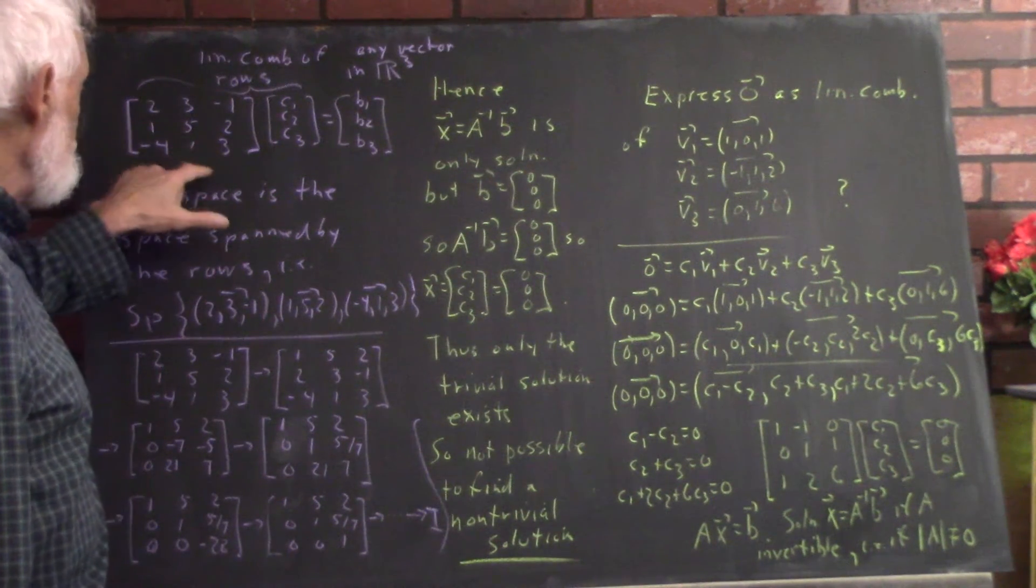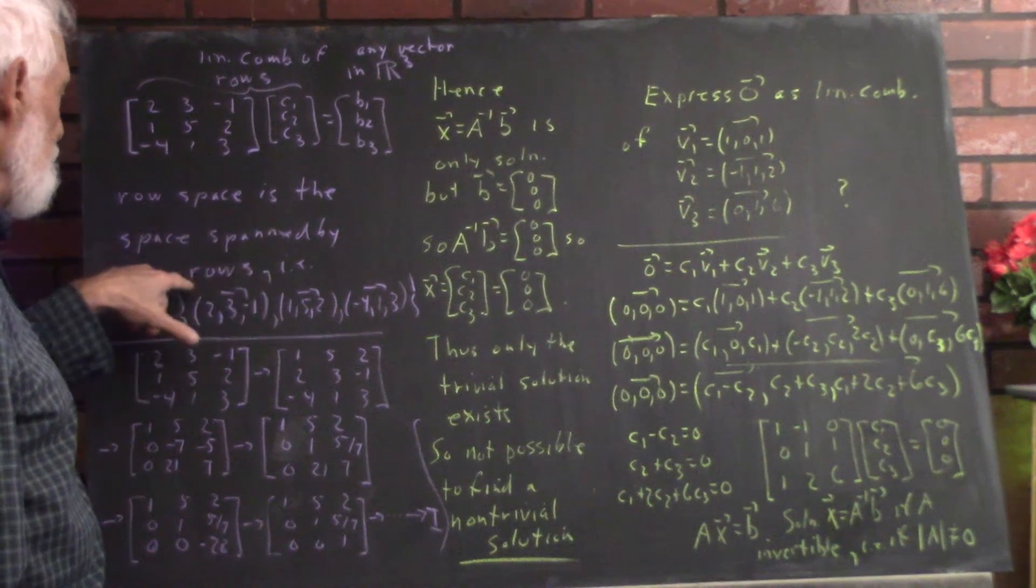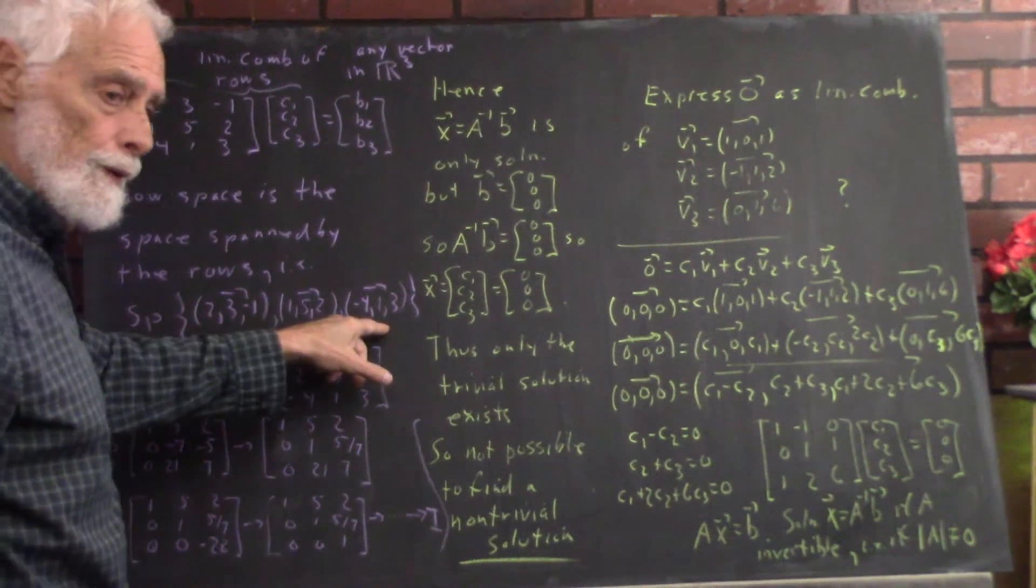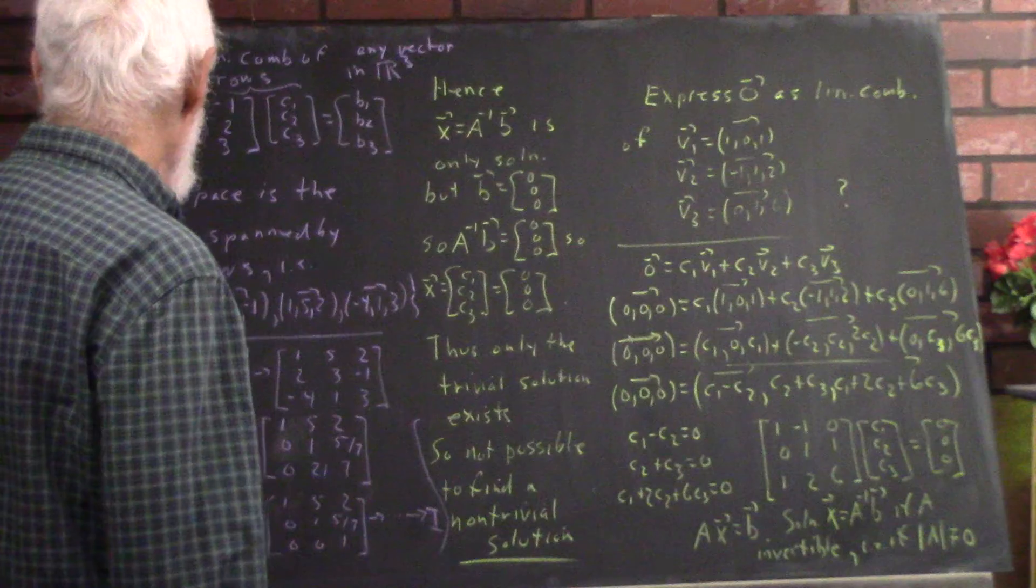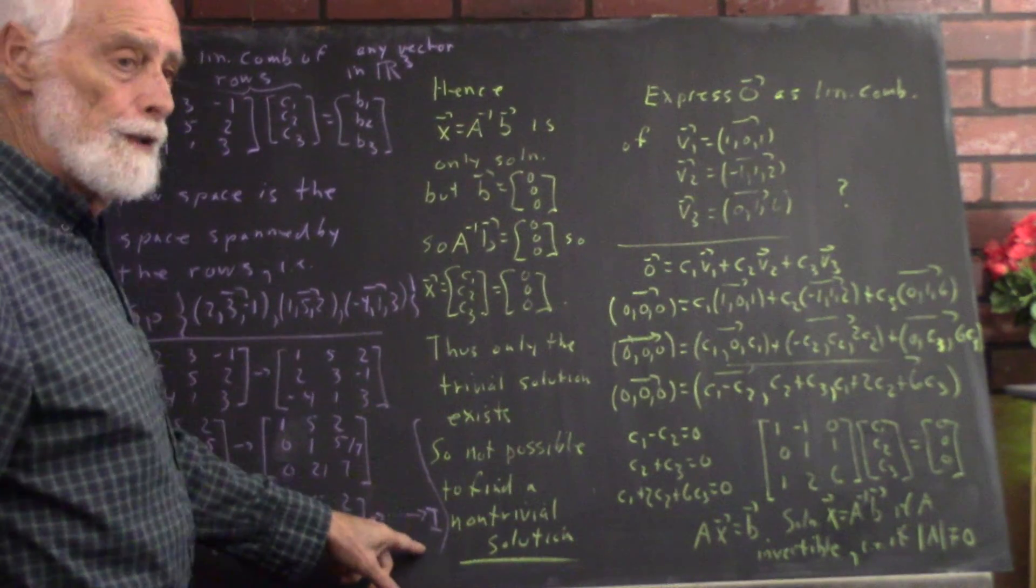We start with the matrix and I tell you that the row space is the space spanned by the rows of the matrix. That is the span of this set of three vectors. You can reduce this set of vectors to the identity.